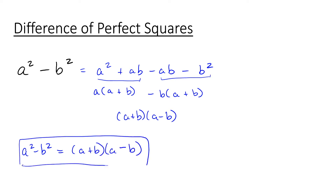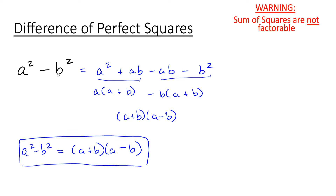The general formula is a squared minus b squared equals a plus b times a minus b. When we say difference of perfect squares, the perfect squares we're talking about are a squared and b squared. One important warning is that sums of squares are not factorable. If you have something like x squared plus 100, we saw in the video on prime polynomials, you can't factor this — even though x is a perfect square and 100 is a perfect square.